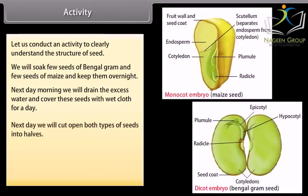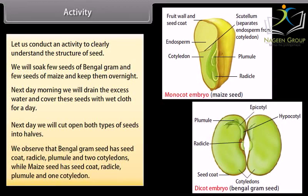Next day we will cut open both types of seeds into halves. We observe that Bengal gram seed has seed coat, radicle, plumule and two cotyledons while maize seed has seed coat, radicle, plumule and one cotyledon.